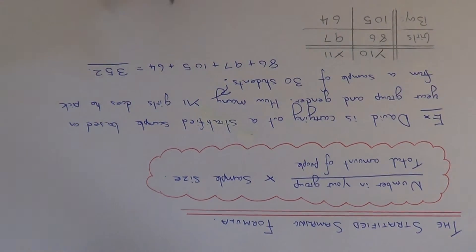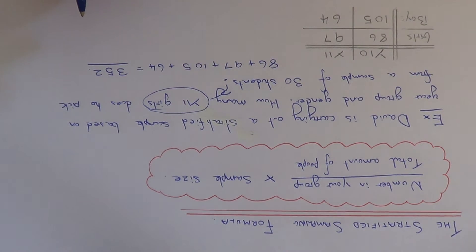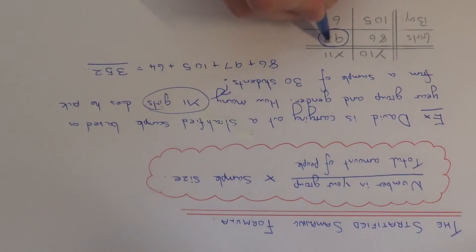So we only need to work out the amount of Year 11 girls we need to pick from our sample. The amount of Year 11 girls is 97.